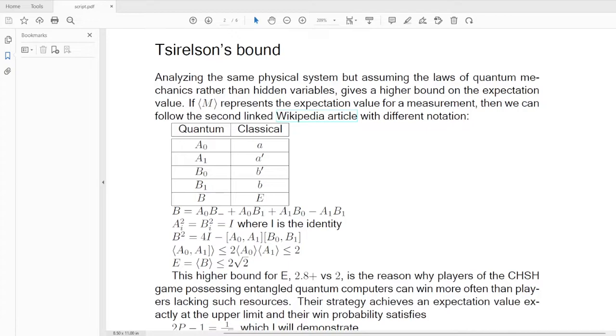So B squared is given by this formula right here. And the expectation value of the commutator satisfies this inequality right here, less than or equal to two. This says that the expectation value is less than or equal to two times the square root of two.